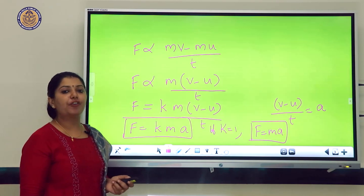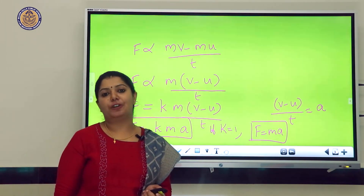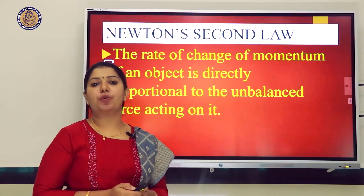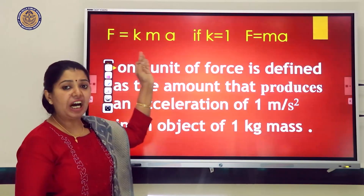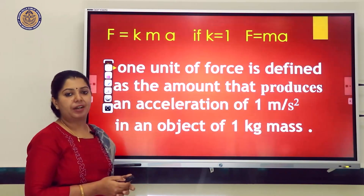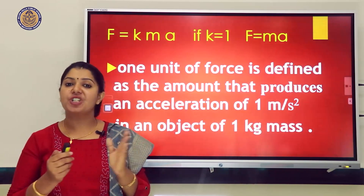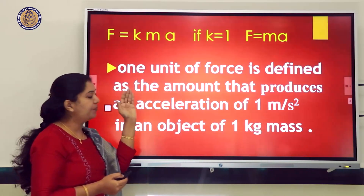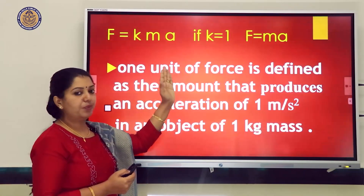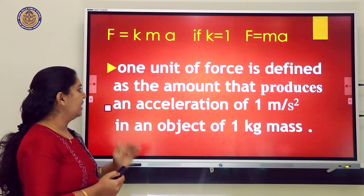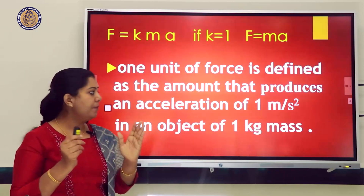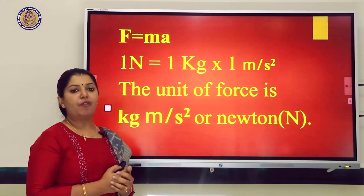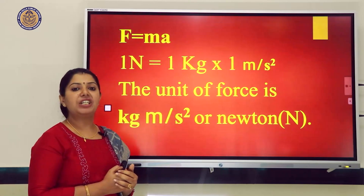According to Newton's Second Law, the rate of change of momentum is directly proportional to the external unbalanced force. We can define the unit of force: one unit of force is the amount that produces an acceleration of 1 m/s² in an object of 1 kilogram mass. Thus, 1 Newton = 1 kilogram × 1 m/s².